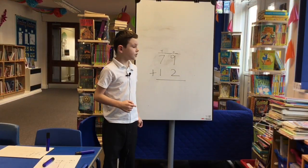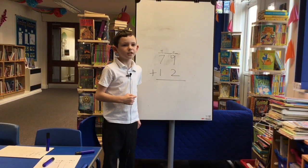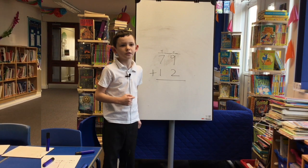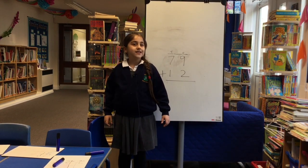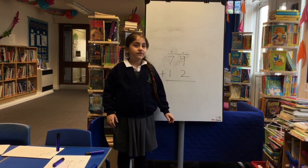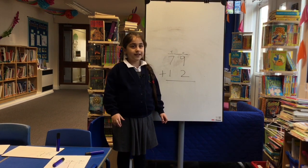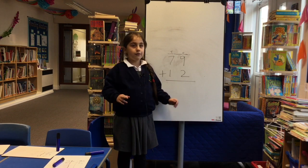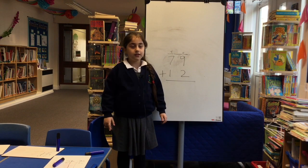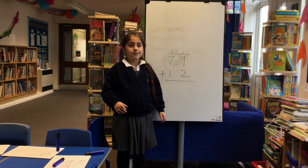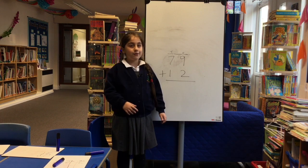This is our calculation and when we write it like this it is a column method. Columns are value. Value means how big, how small, how many, how much.